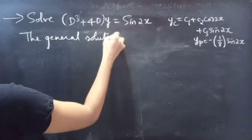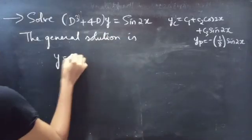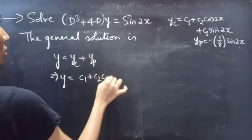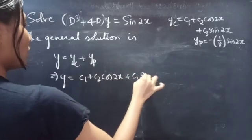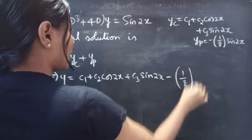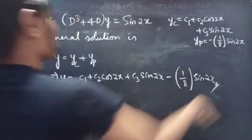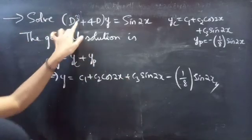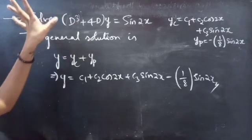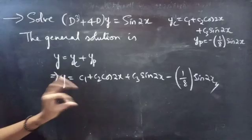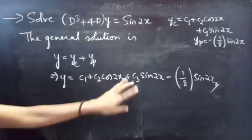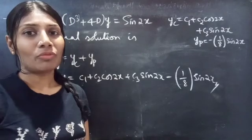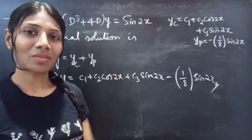The general solution is y = yc + yp: y = c1 + c2·cos(2x) + c3·sin(2x) − (1/8)·x·sin(2x). We have three constants c1, c2, c3, consistent with order 3. We have seen a problem from higher order linear differential equations. Hope you understand — see you in the next video. Bye-bye.